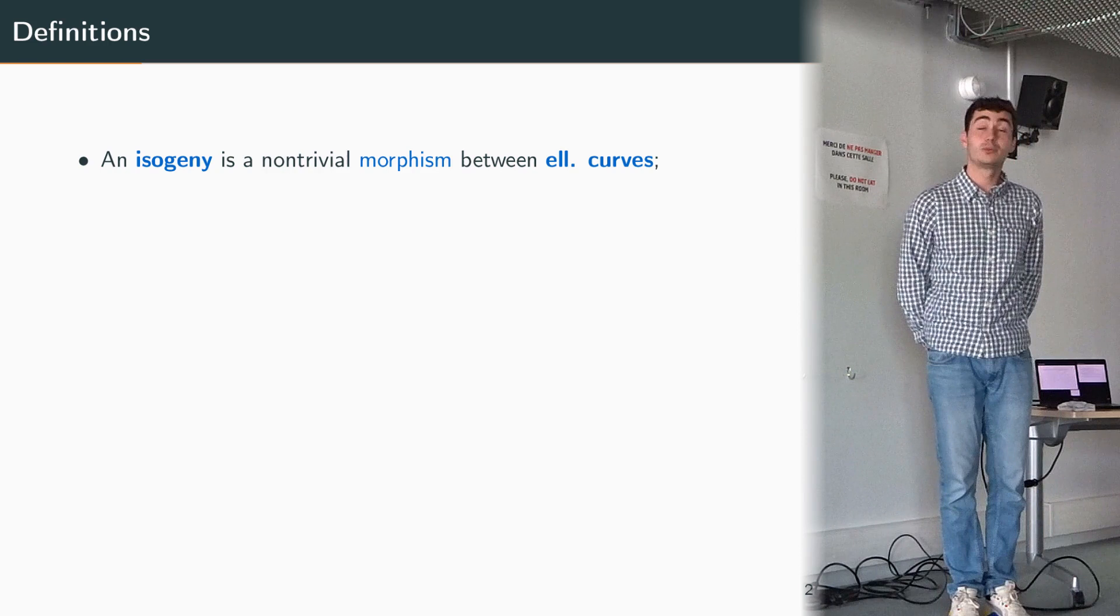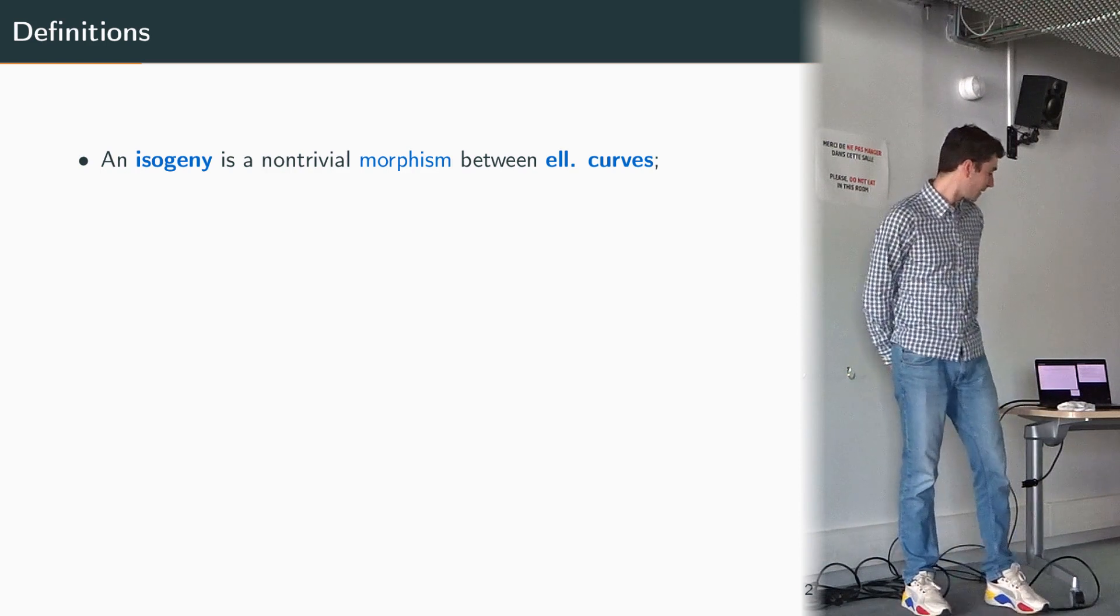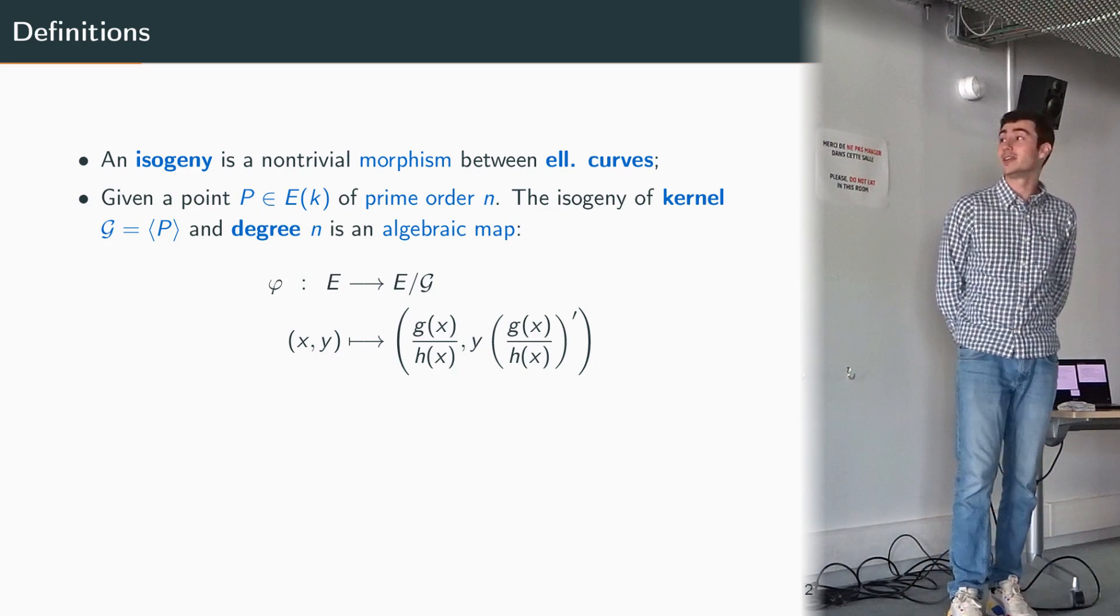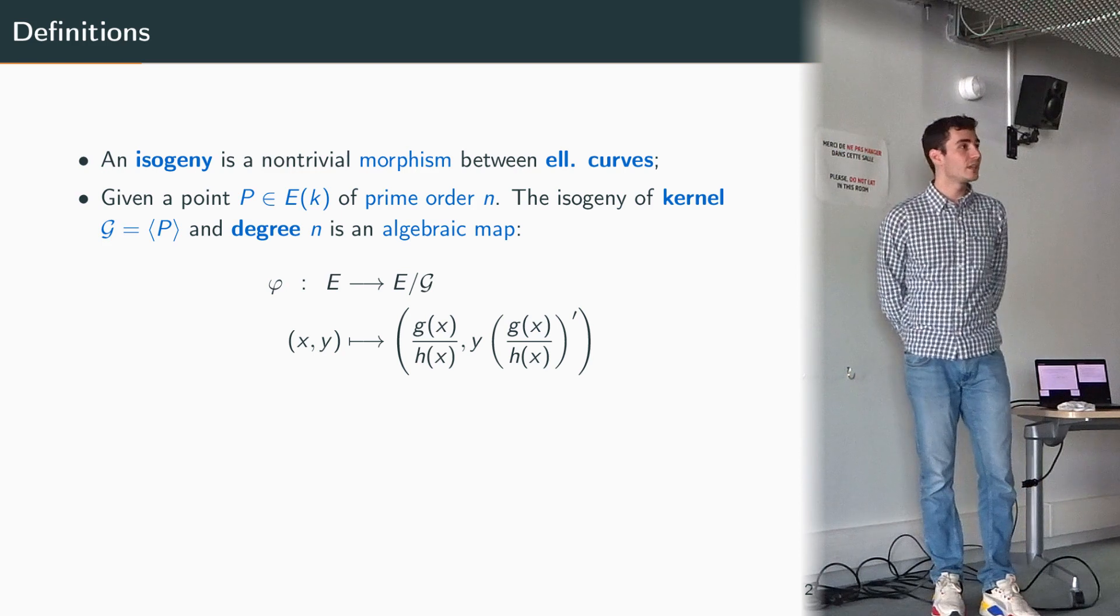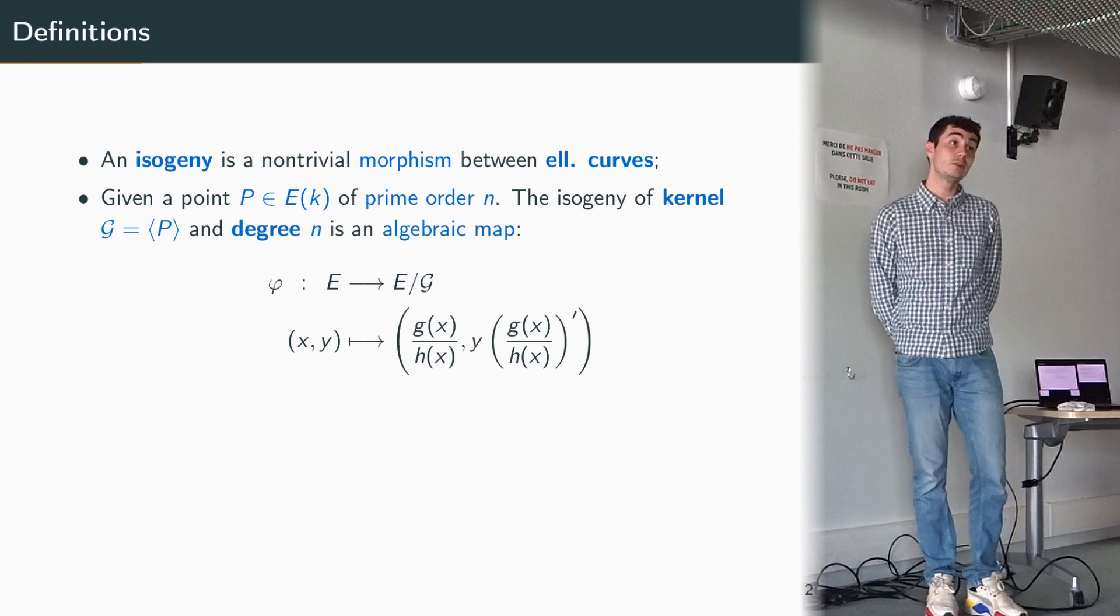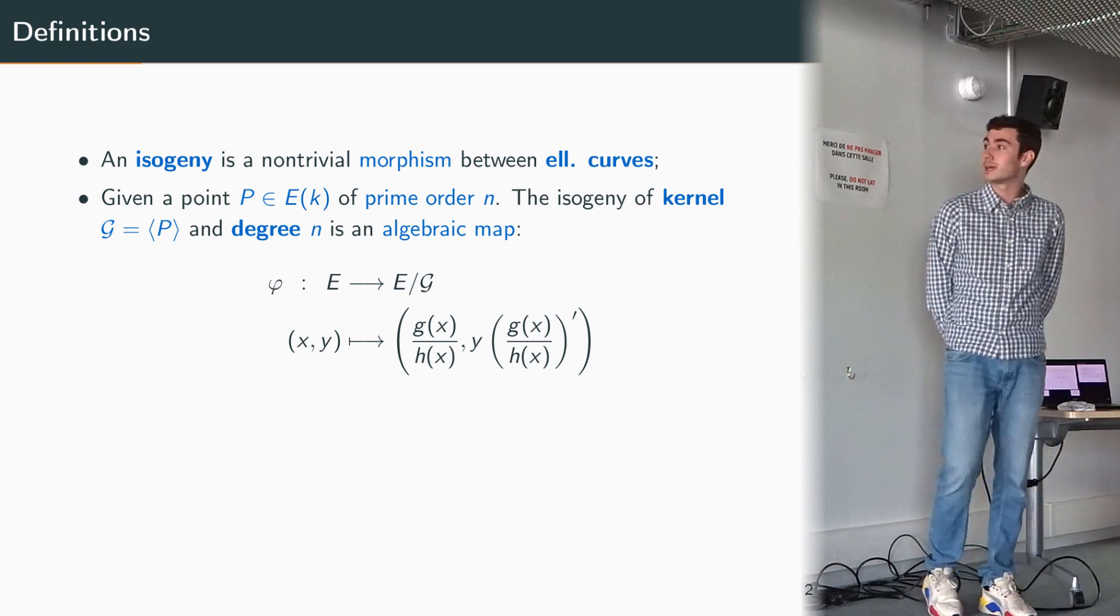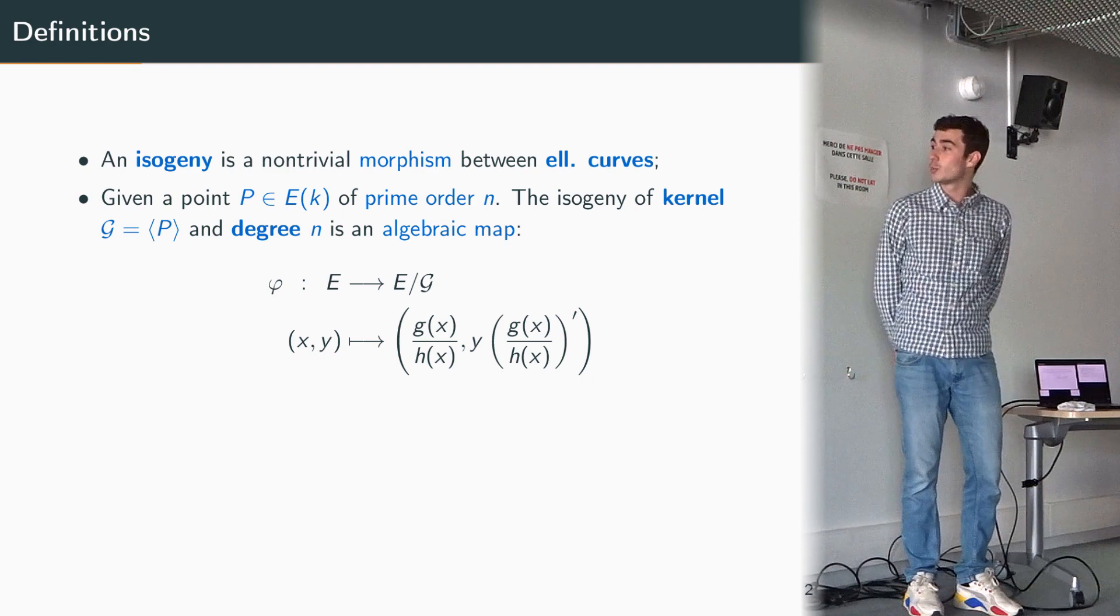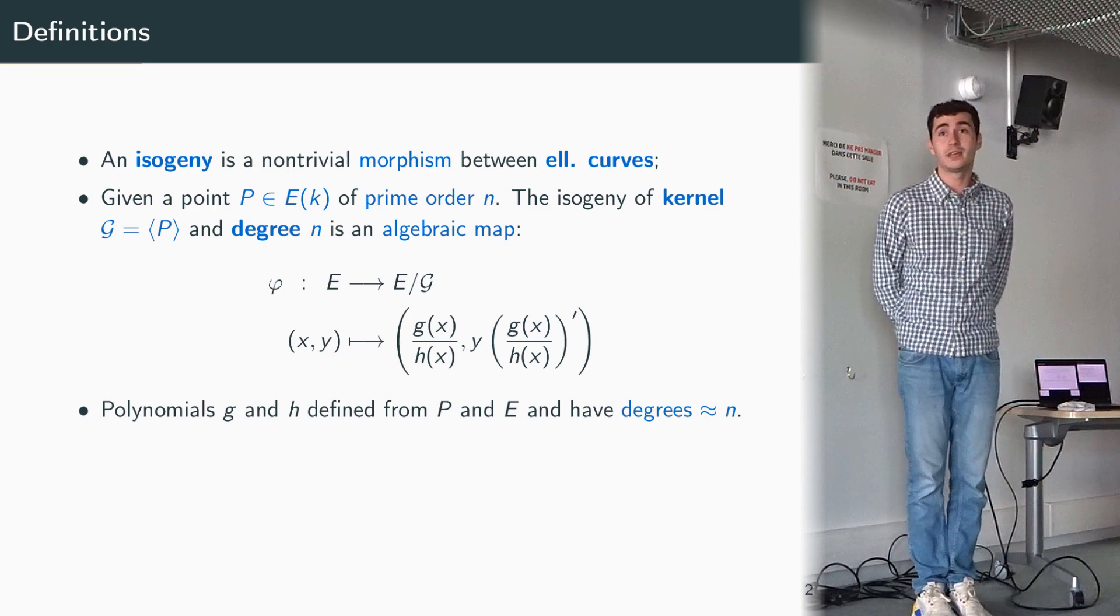So first let's start with a few definitions. An isogeny is a non-trivial morphism between elliptic curves. More concretely, if we take a point P defined for some curve E over some field k, a point P who has prime order n, then we can define the isogeny whose kernel is generated by P. In this case the degree will be n and we can express it as an algebraic map going from the curve E to another curve, the co-domain that we write E mod G. This algebraic map is defined with this formula here using some polynomials G and H which can be computed from the knowledge of P and the curve E and whose degree is approximately n.